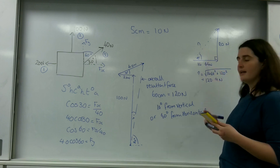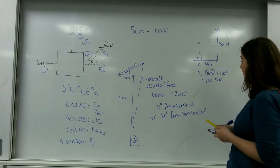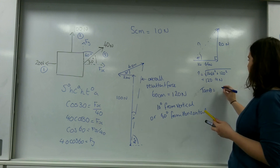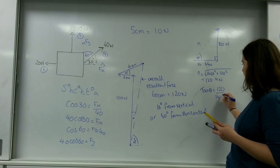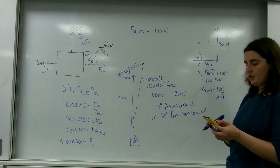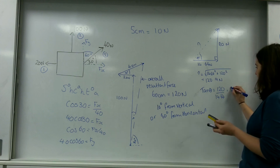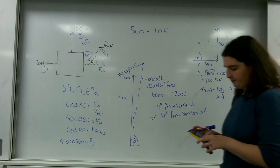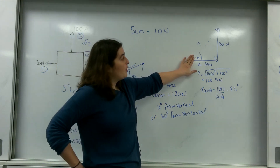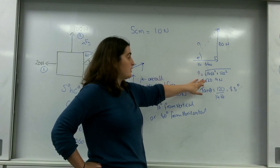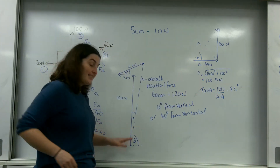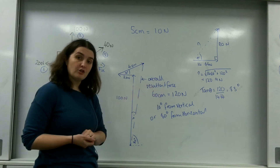To find the angle, I use trigonometry: tan theta equals opposite over adjacent, so tan theta equals 120 over 14.64. Taking the inverse tan gives 83 degrees. Comparing the two methods: using components, my resultant is 120.9 newtons at 83 degrees from the horizontal, while my scale diagram gave 120 newtons at 80 degrees from the horizontal.